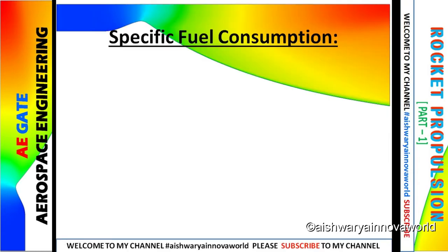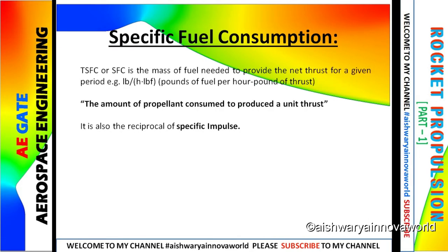Next comes specific fuel consumption. The definition is how you consume fuel with respect to unit thrust. For a rocket we can also write as the reciprocal of specific impulse. So SFC equals to 1 by ISP. The unit of specific impulse is second, so when you give a reciprocal, the unit is second inverse.